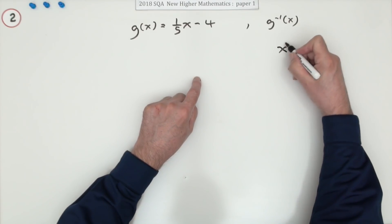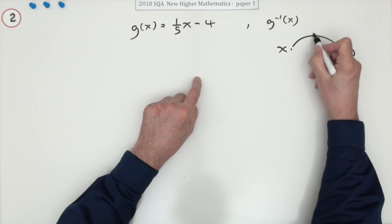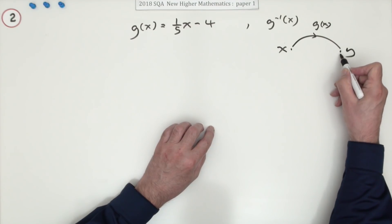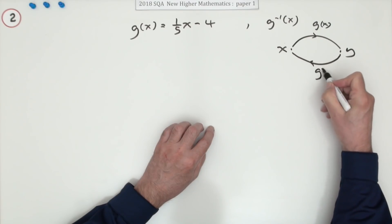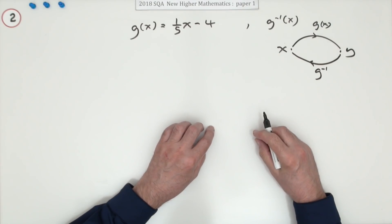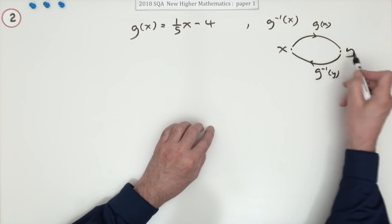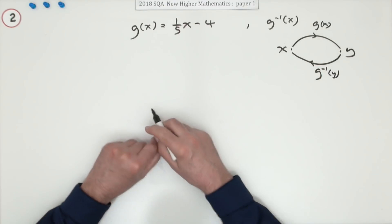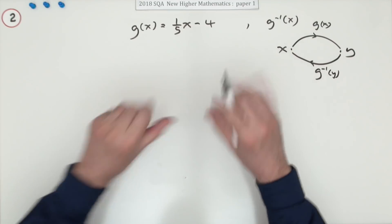Which means that if you've got the answer and you want to go back to the original one, you'll apply the inverse. Notice the inverse actually acts on y using that terminology specifically - x for the starting number, y for the answer. But you have to write the answer in terms of g^(-1)(x), that's where the wee fiddly bit comes in.